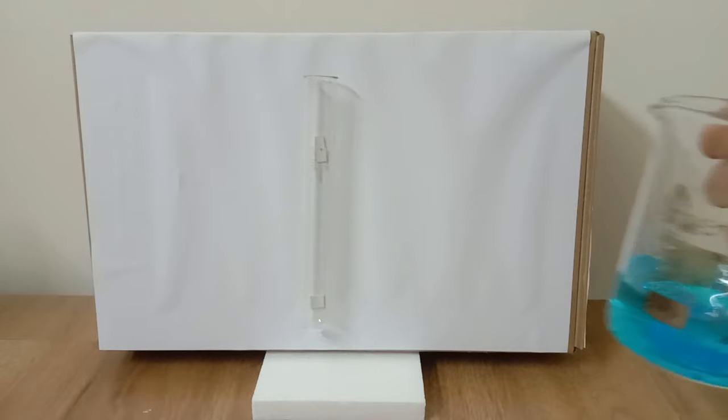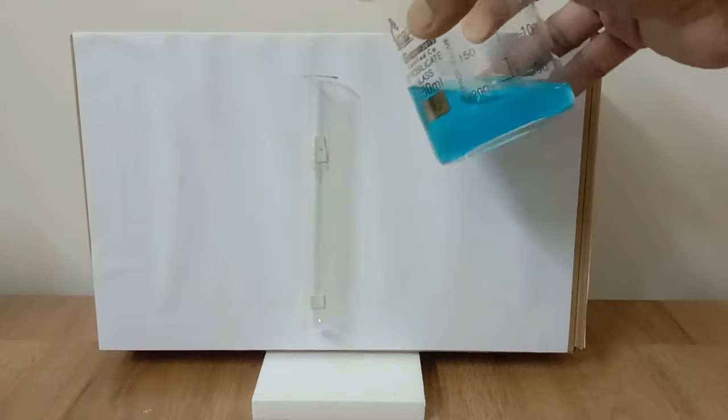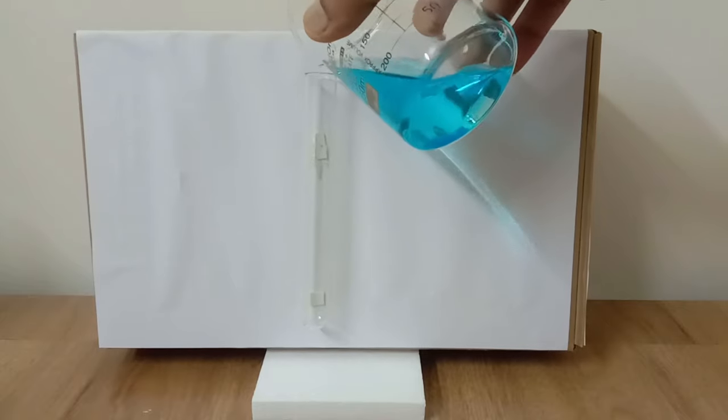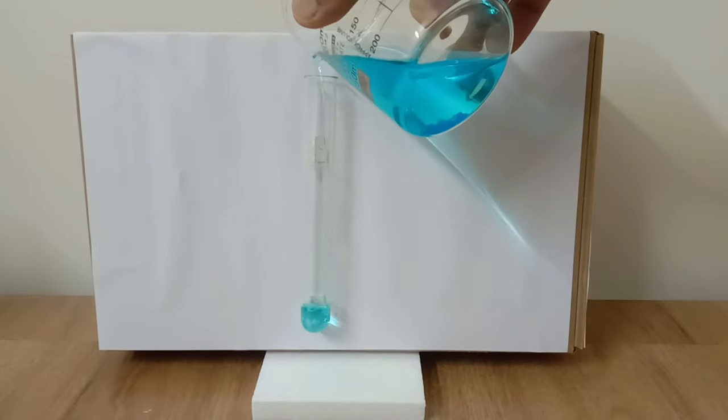Now, this blue color copper sulphate solution, I am going to put it in the test tube and I am going to gently lower the iron nail into it.